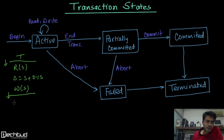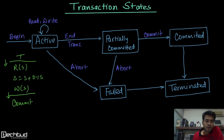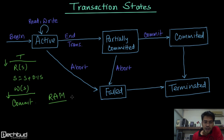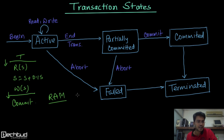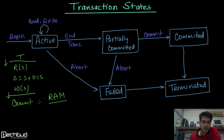Once commit starts, the transaction will be in the partially committed stage. Even after the value has been written and committed, it is still in RAM. RAM is volatile memory — nothing is stored yet on the hard disk. So if hardware fails while the value is in RAM, that value will be lost.